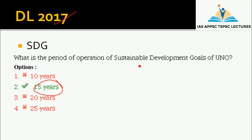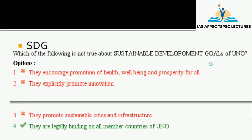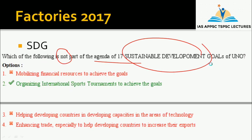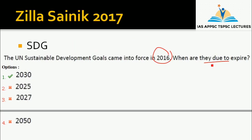What is the period of operation of Sustainable Development Goals of UN? UN Sustainable Development Goals came into force in 2016 — when are they due to expire? The answer is the year 2030.